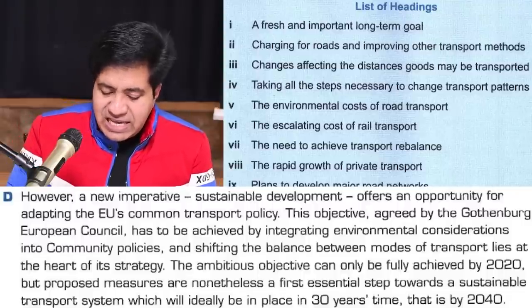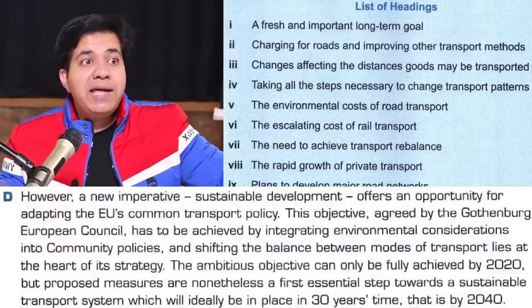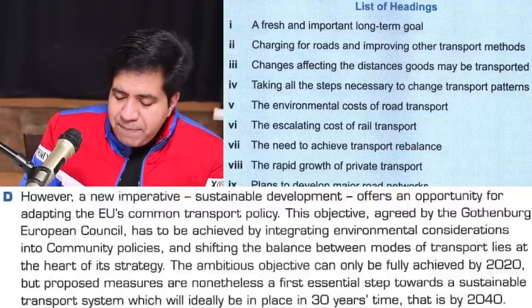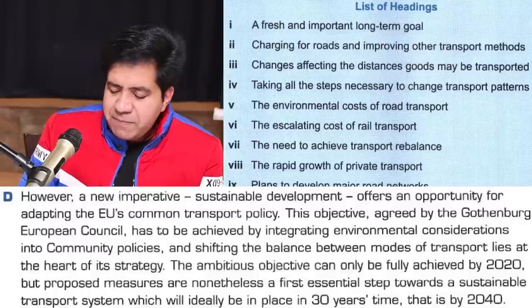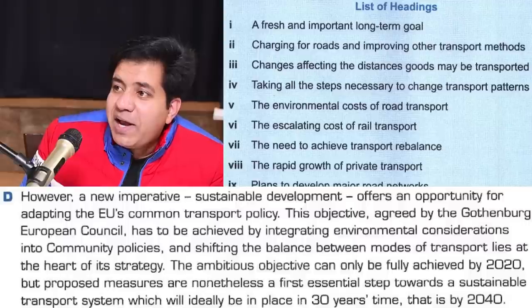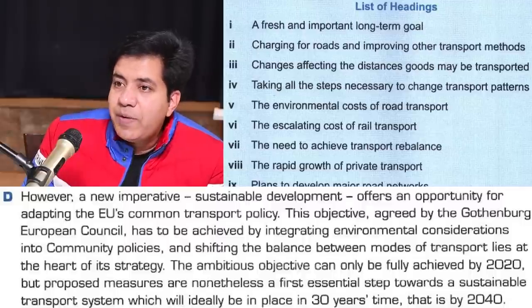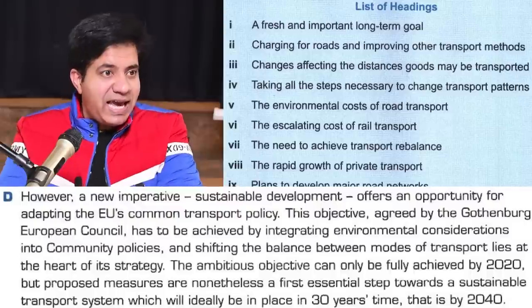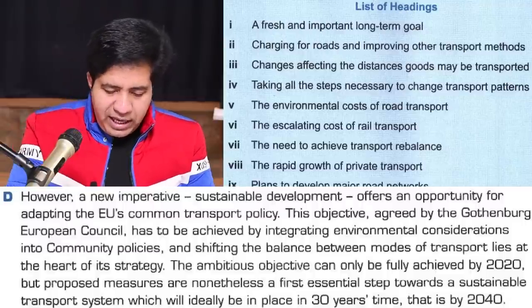Paragraph D: even though most of the paragraph is general, go to the last line — 'one transport system which will ideally be in place in 30 years' time, that is by 2040.' A 30-year target is a long-term goal. So the answer is heading number one: 'A fresh and important long-term goal.' The key was in the last line — this is why you must look beyond the first sentence. It's not as easy when you do it alone; you need to train yourself to focus.